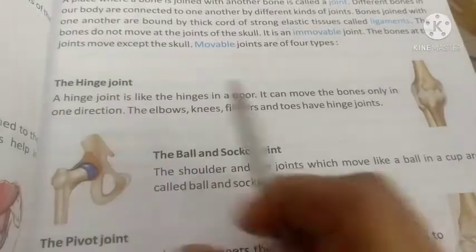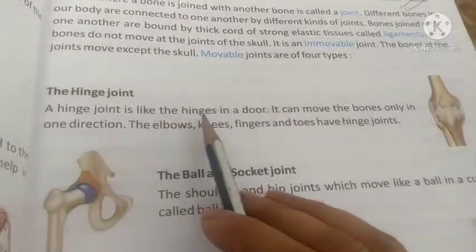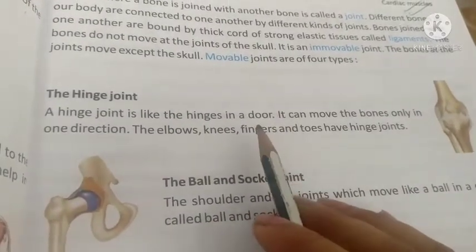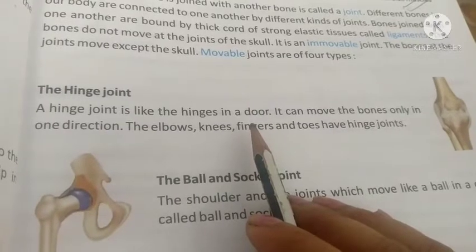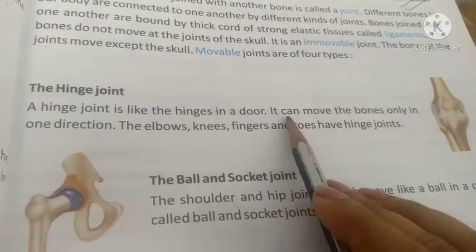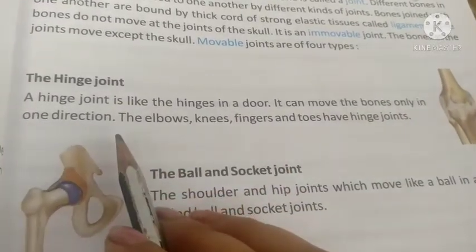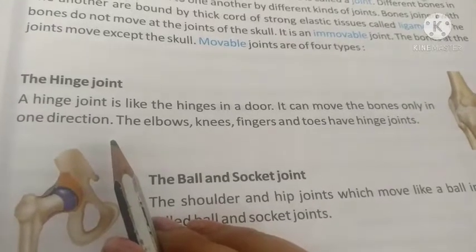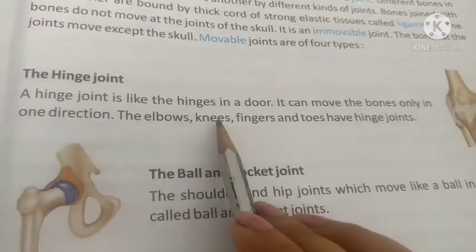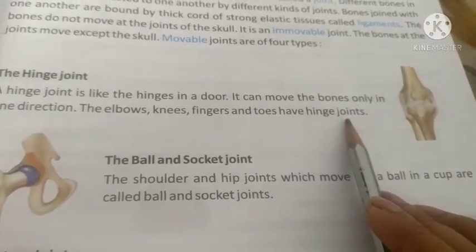A hinge joint is like the hinge in a door. It can move the bones only in one direction. Examples include the elbow, knee, finger, and toe. This is a hinge joint.